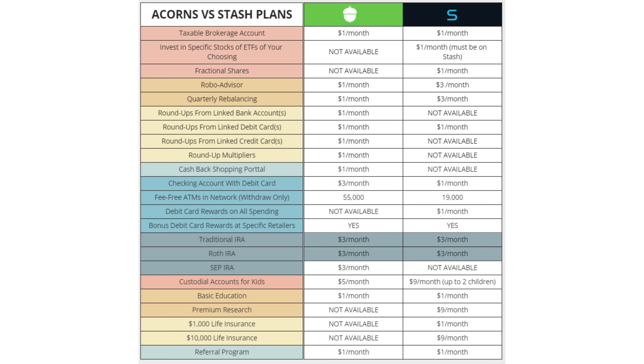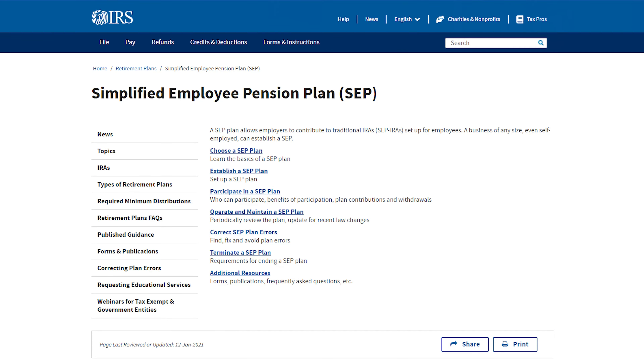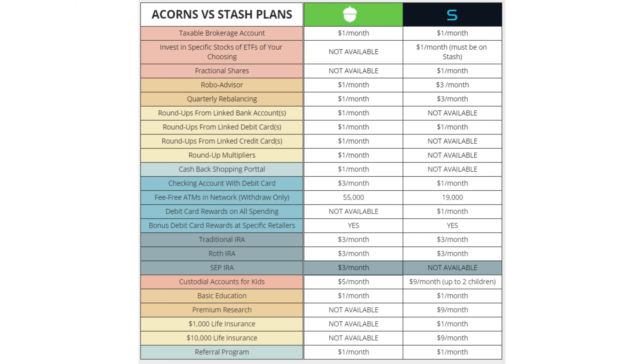Let's move on to other account types. Both Acorns and Stash offer traditional and Roth IRAs in their $3 a month plan, so they're equal on those fronts. One key difference is that Acorns' $3 a month plan also allows you to open a SEP IRA. SEP IRAs are not supported by Stash. A SEP IRA is a retirement account for business owners and those with self-employment income — it lets you contribute up to a certain percentage of your business income, you get a tax deduction for that contribution, and it grows tax-deferred much like a traditional IRA. So if you want to open a SEP IRA, Acorns is the one for you.